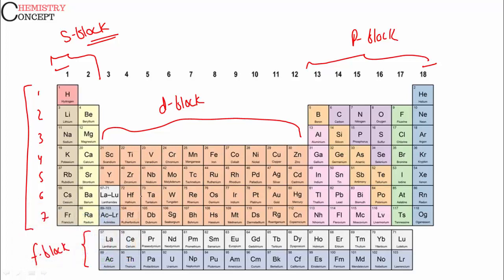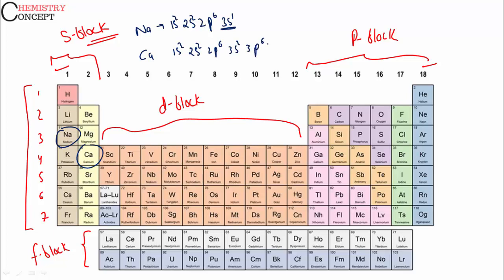This classification is based on electronic configuration. For s-block elements, take sodium as an example. Its electronic configuration is 1s2, 2s2, 2p6, 3s1. The last electron is always present in the s sub-shell. So s-block contains all elements in which the last electron enters the s sub-shell. For example, calcium has atomic number 20: its configuration is 1s2, 2s2, 2p6, 3s2, 3p6, 4s2 — last electron enters s sub-shell.